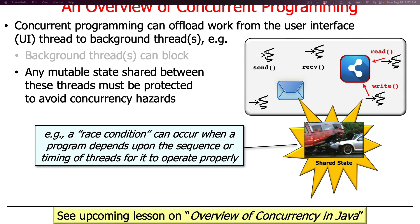A good example of a concurrency hazard is a race condition, which occurs when a program only works correctly depending on the sequence or timing of thread execution. If threads happen to run in a particular order, it works; if not, you end up with memory corruption — multiple things smashing into each other in memory making changes that aren't properly protected.